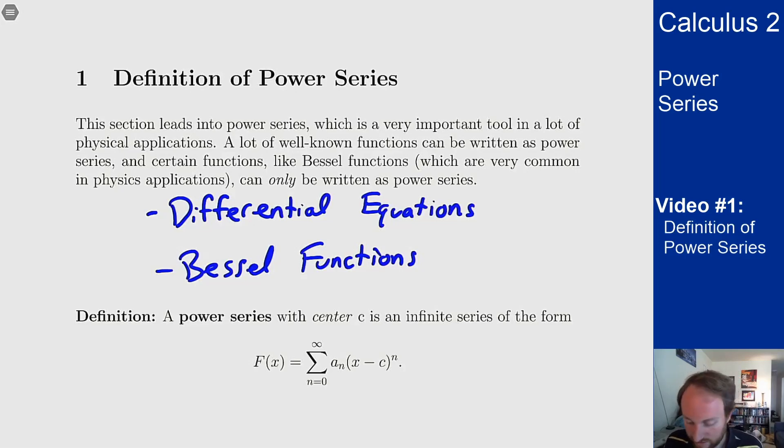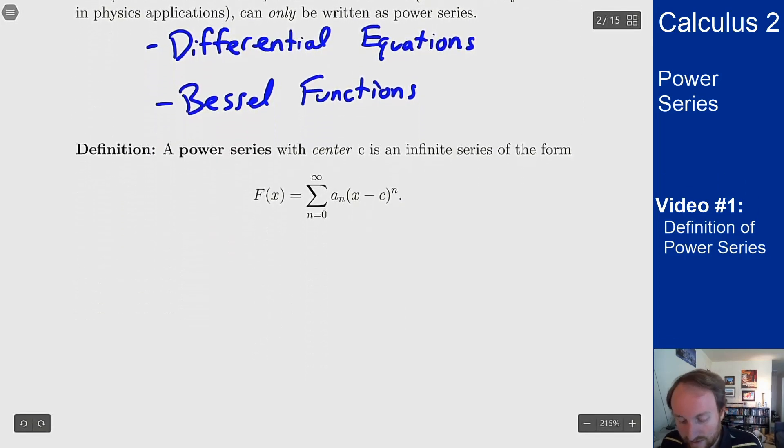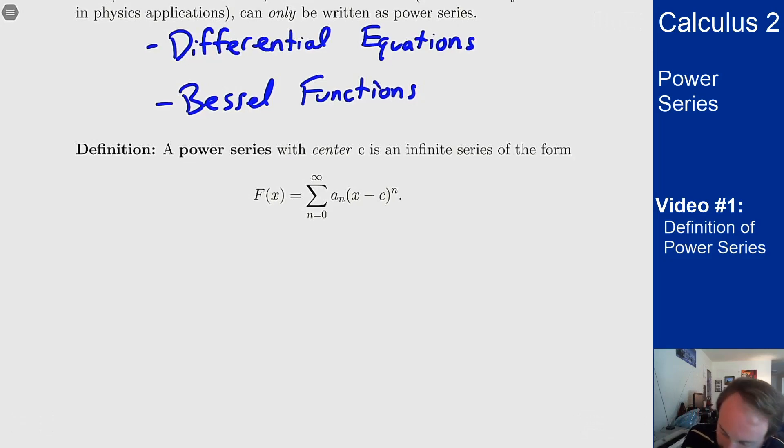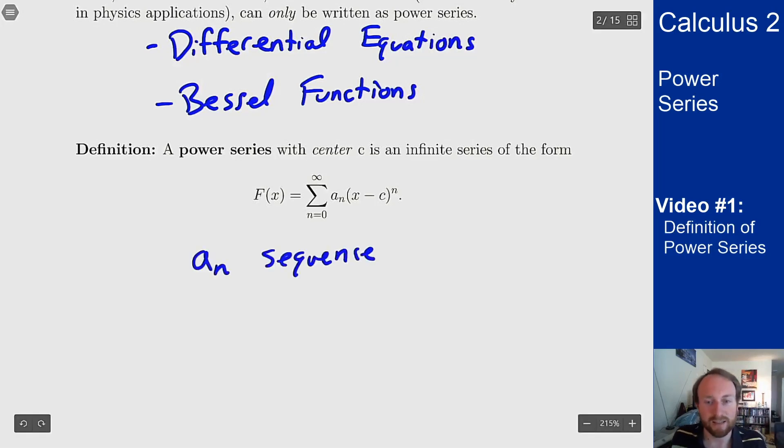What is a power series? A power series is an infinite series of the following form. It's f of x equals the sum from zero to infinity of some sequence a_n times (x minus c) to the power n. a_n is a sequence of coefficients, and c here is the center of the power series.